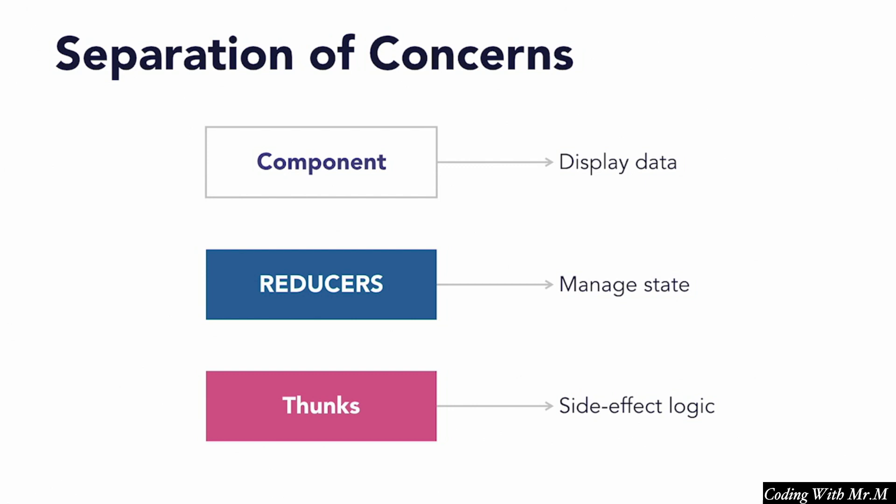A main theme so far with our React ecosystem tools has been the separation of concerns. We want our components to worry about displaying the data we give them, we want our reducers to worry about making changes to the state, and we want our Thunks to handle all of the side-effects logic and server communication. We've done a pretty good job of ensuring separation of concerns, but there are still one or two things that are a little bothersome, and they might not be obvious at first.